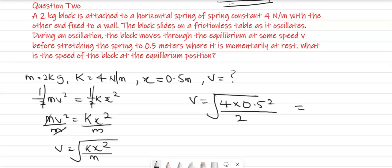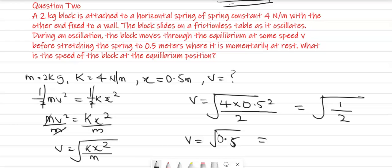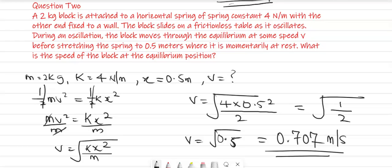This gives us the square root of 0.5 squared. Using a calculator, 0.5 squared is equal to 0.25. Therefore, 0.25 times 4 gives you 1. Therefore, we have 1 over 2, and the square root of 1 over 2. Since 1 divided by 2 is equal to 0.5, the square root of 0.5 is equal to 0.707. The unit of speed V is meters per second. Therefore, this is our final answer: V is equal to 0.707 meters per second.